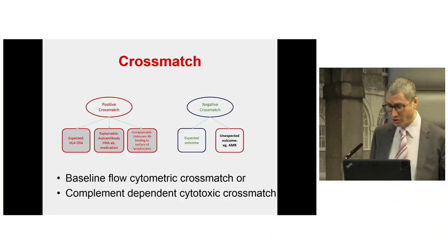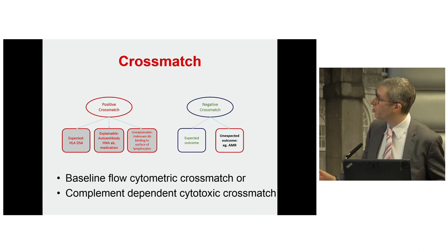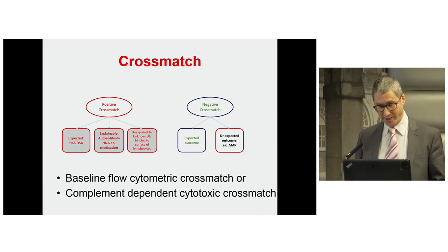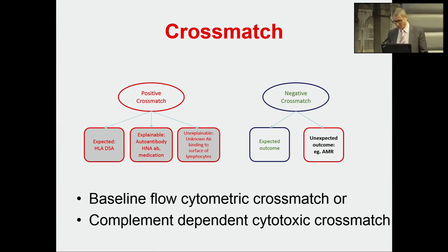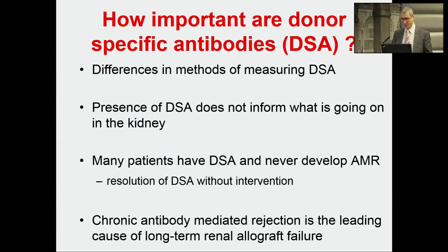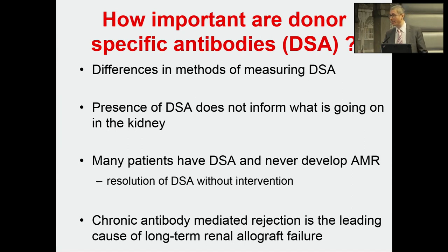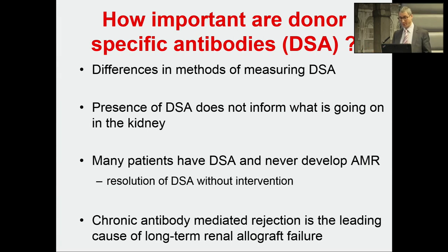We know about doing the cross-match. Many places have used baseline flow cytometric cross-match or the CDC complement-dependent cytotoxic cross-match. What I want to talk about is how important donor-specific antibodies are — their presence does not always inform what is going on in the kidney, and that's really what you want to know. Can they be used as a biomarker? I use EBV viremia as a biomarker to gauge how much immunosuppression an individual patient needs. Many patients can have post-transplant donor-specific antibodies and will never develop antibody-mediated rejection.